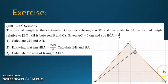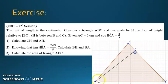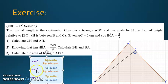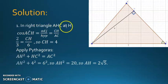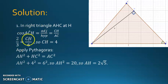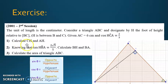Choose the right triangle CHA — right at H — since I want the length of CH. With respect to C, CH is the adjacent side and AC is the hypotenuse. The rule combining adjacent and hypotenuse is cosine, which is already given. So cosine C equals CH over CA. Replace cosine HCA with 2 over 3 and AC with 6. Cross multiplication gives CH equals 4. Then calculate AH using the Pythagorean theorem with CH and AC.